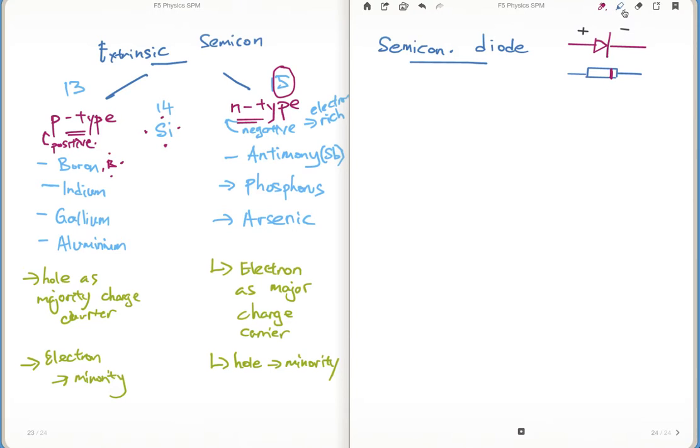So that's how you distinguish. This is how the diode should look like. Now, how is it being made? It is actually a combination of the P-type and the N-type semiconductor.